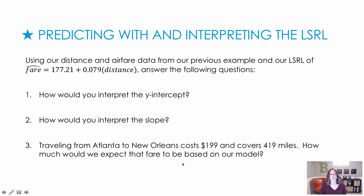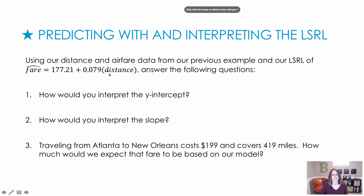For this next question, I want to use the distance and airfare data from the previous example. Our least-squares regression line is: fare-hat equals 177.21 plus 0.079 times distance. Try all three parts on your own first, then press play and check your work.